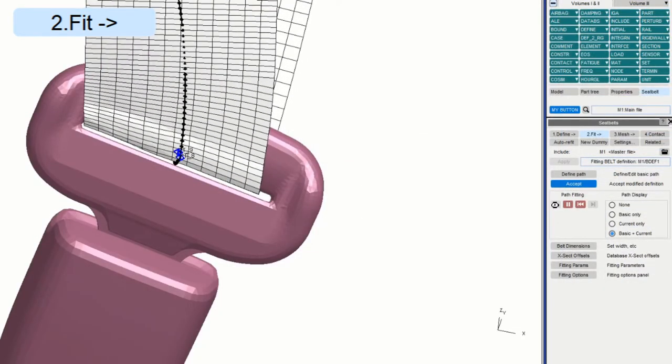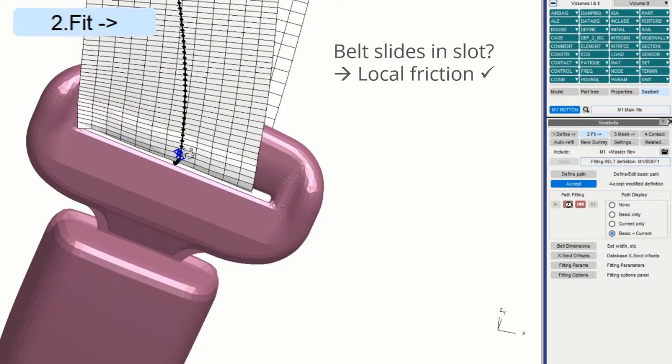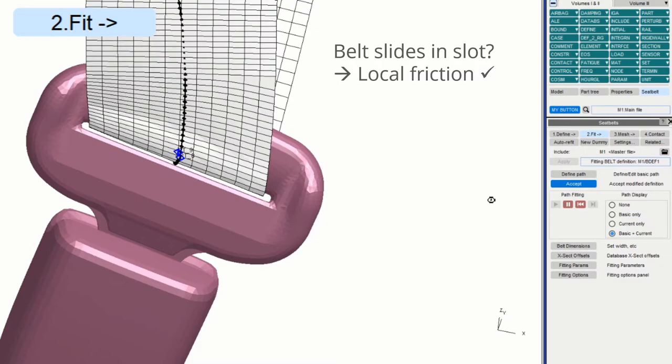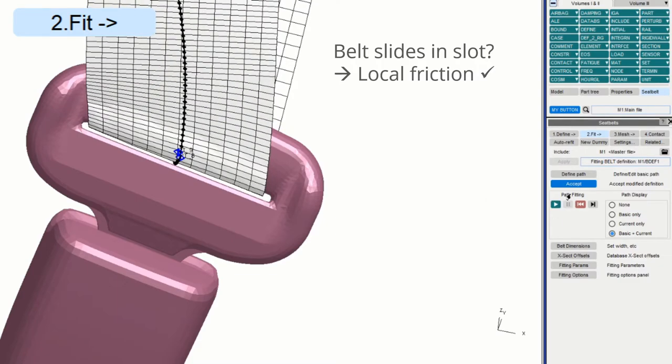If, during fitting, you see the belt slide and hit the end of the slot like this, you can set local friction to 1, which has the special effect of stopping all sliding motion.